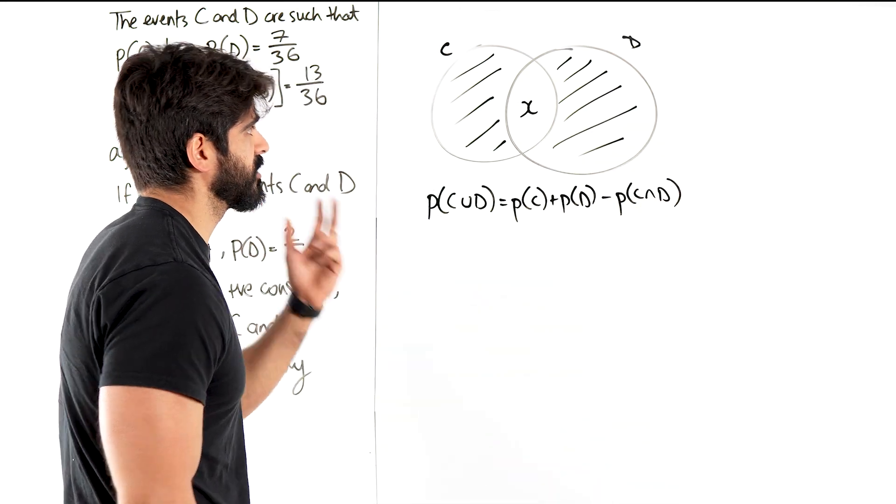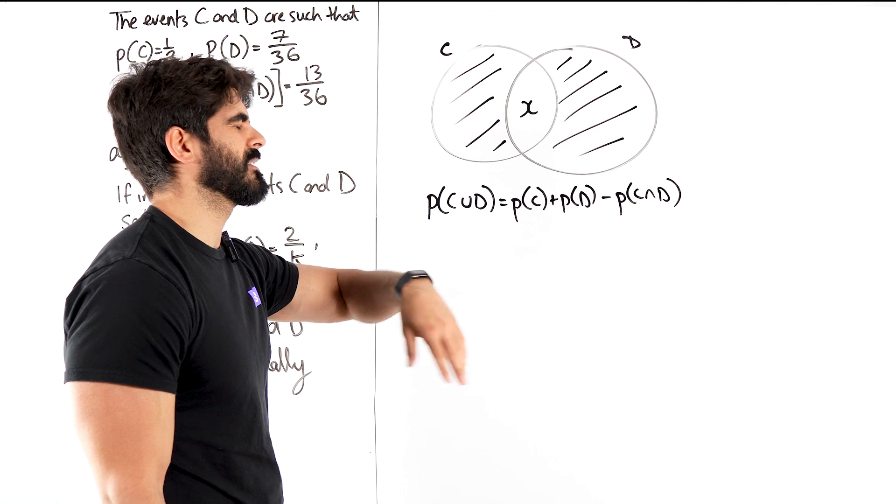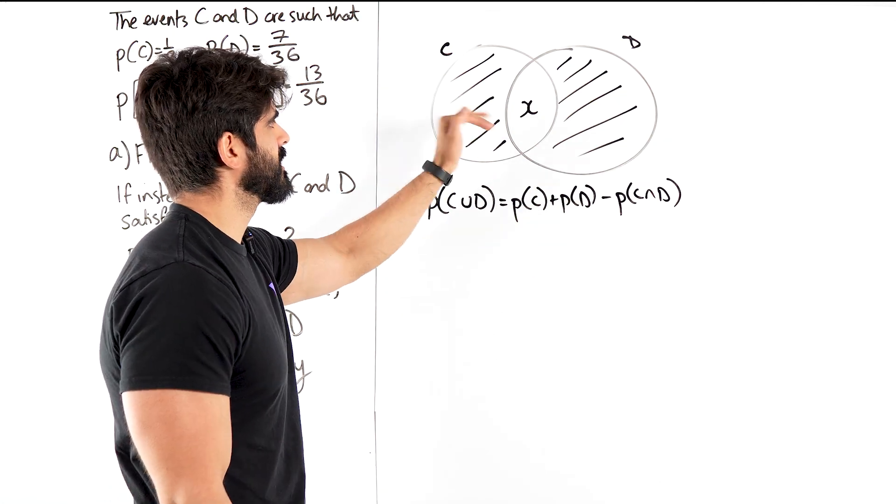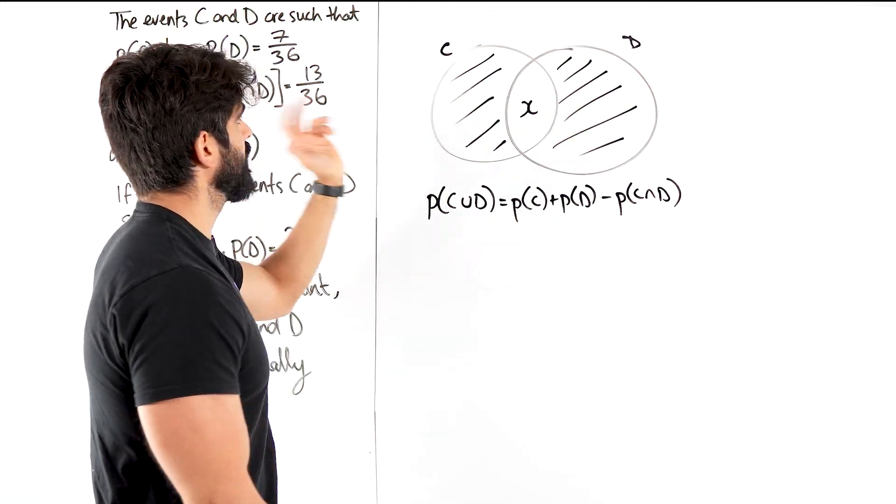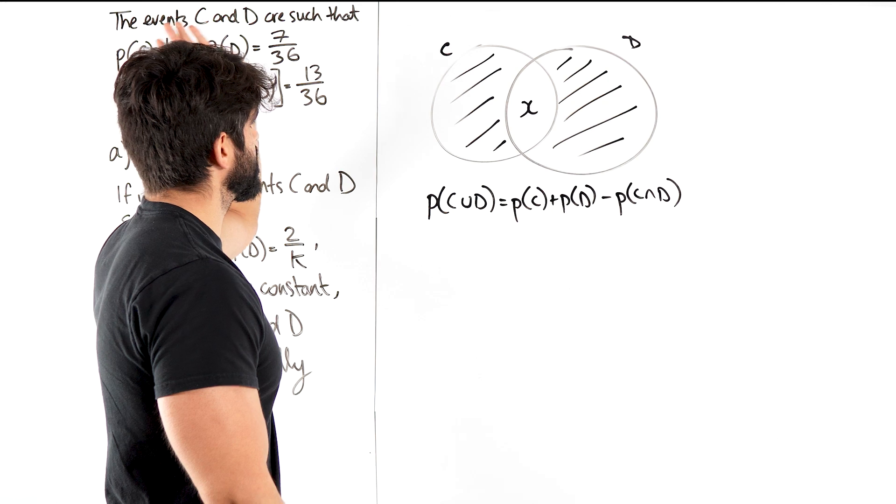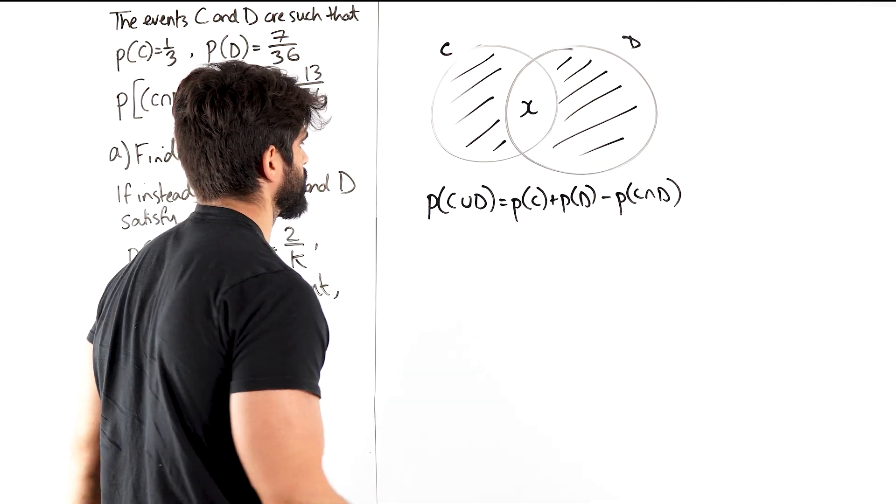Now you could have done this the long way and label X, Y, Z and just like say Z plus X is a third and X plus whatever is this and solve simultaneously. Nah, ain't nobody got time for that.